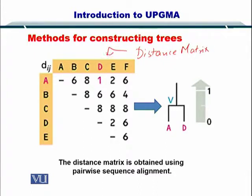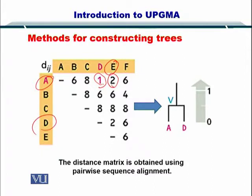This is the distance matrix d_ij where you can easily read that the distance between A and B is 6. Obviously, by looking at this matrix, you can understand that D and A are very similar because the distance is the smallest. The next closest is A and E because their distance is 2. Similarly, D and E also have a distance of 2, but we have to consider the smallest distance. So A and D are selected.